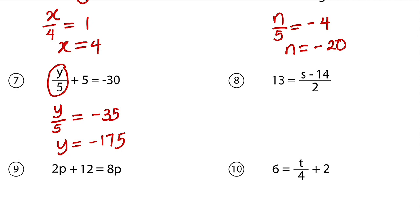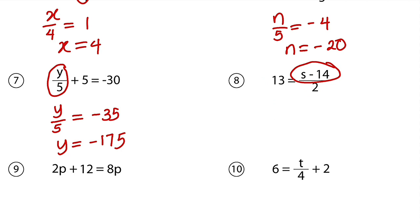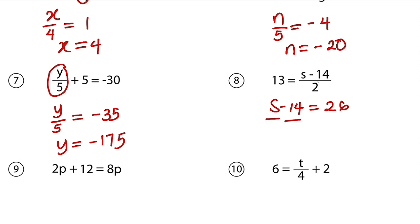Moving on to question number 8. What number can be divided by 2 to get 13? The number must be 26. Therefore, s minus 14 must be 26. Again, what number — because we are looking for s — what number can I subtract 14 from to get 26? The number must be 40, because 40 minus 14 is 26. So s is equal to 40. Or you can simply add 14 to both sides.